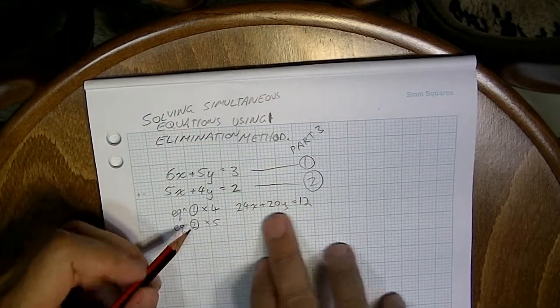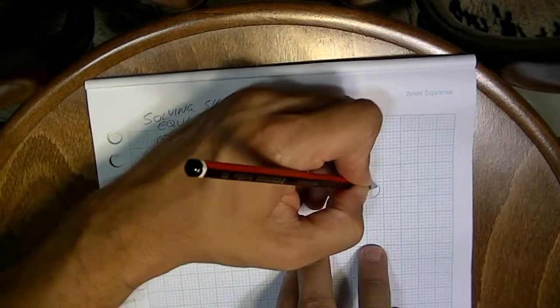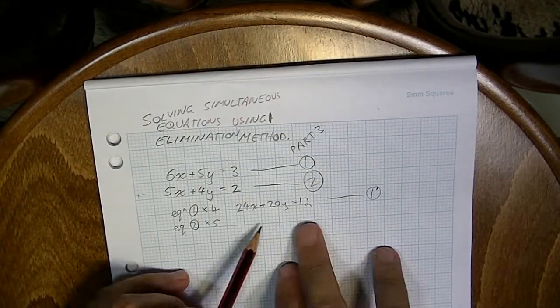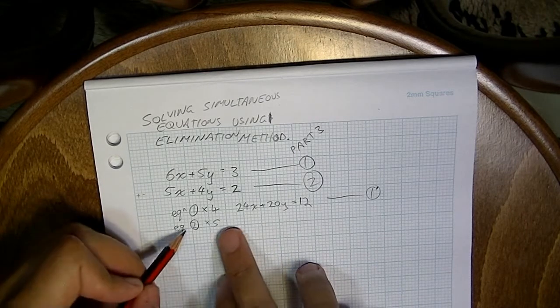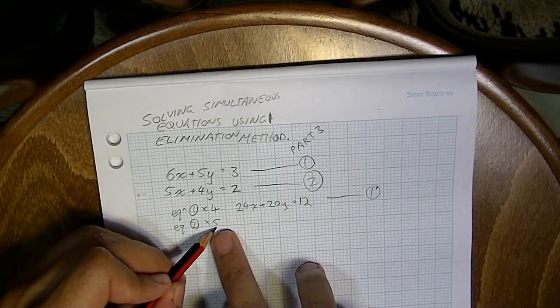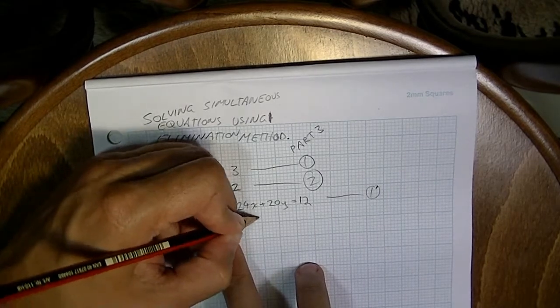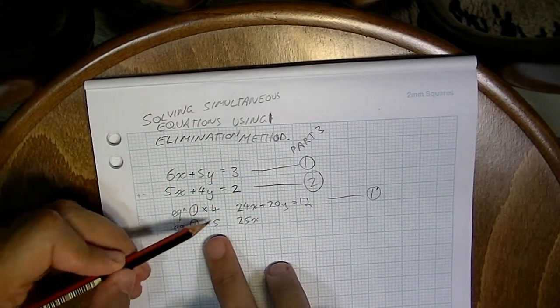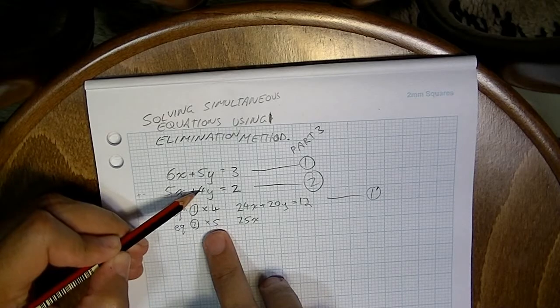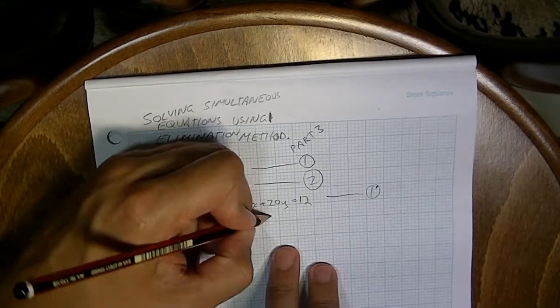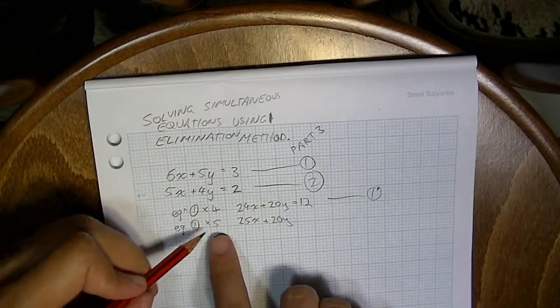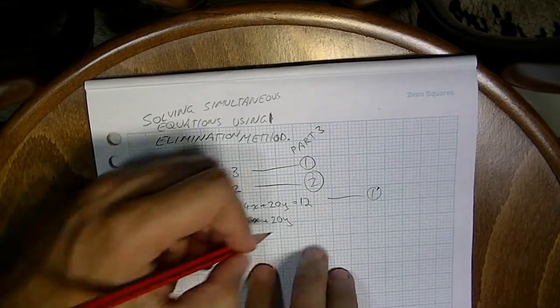Okay, so that's first equation done. That's equation one. You can put a little dash there to note that it's changed. Now equation two we're going to multiply that by 5. So 5 times 5x, that's going to be 25x. 5 times positive 4y, that's going to give me 20y. And 5 times 2, that's going to give me 10.